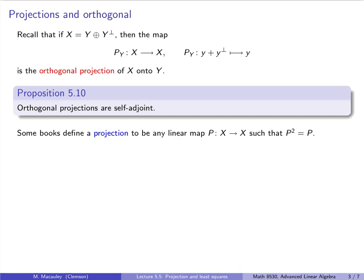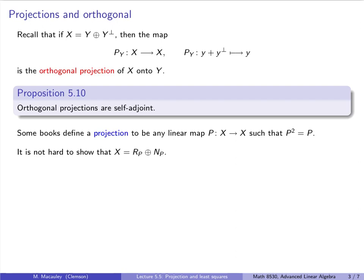Some books define a projection—without the word orthogonal—to be any linear map P from a space to itself such that P² = P. I like to call this idempotent, as this is what the concept is called more generally in other areas of math. It is not hard to show that for such a map P, X decomposes into a direct sum of its range and its null space. If the dimension of X is N and the dimension of the range is R, the null space has dimension N minus R. So it suffices to show that X is the sum of the range and null space, and then the direct sum follows from a dimension argument.